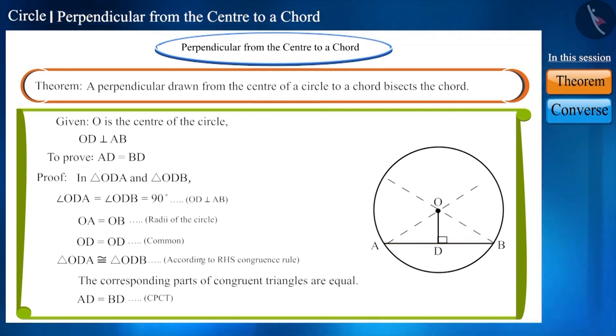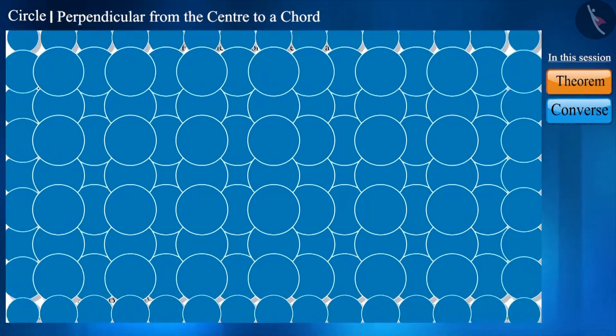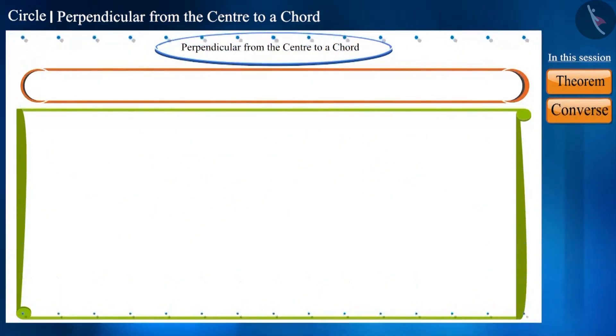Thus, we prove that a perpendicular from the center of the circle to a chord bisects the chord. Friends, will the converse of this theorem also be true? That is, if we say, a line drawn through the center of a circle to bisect a chord is perpendicular to the chord, will the statement be true?